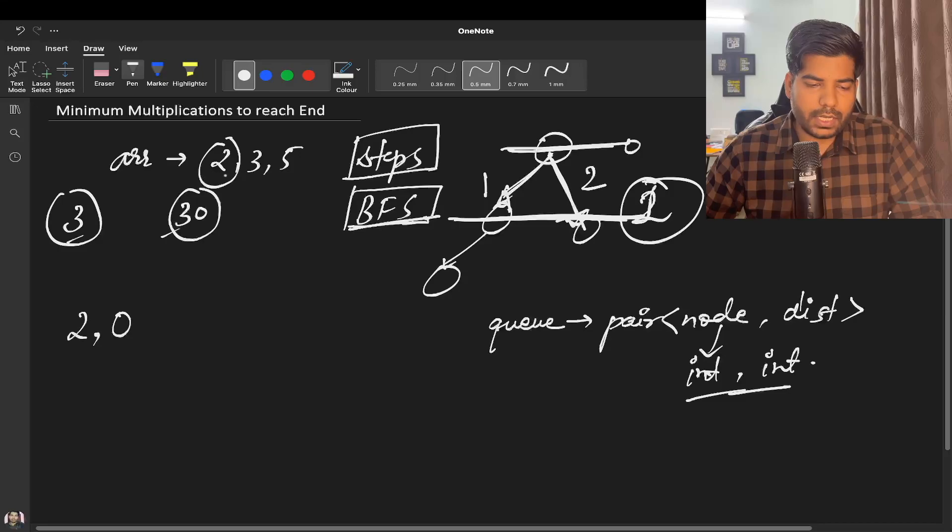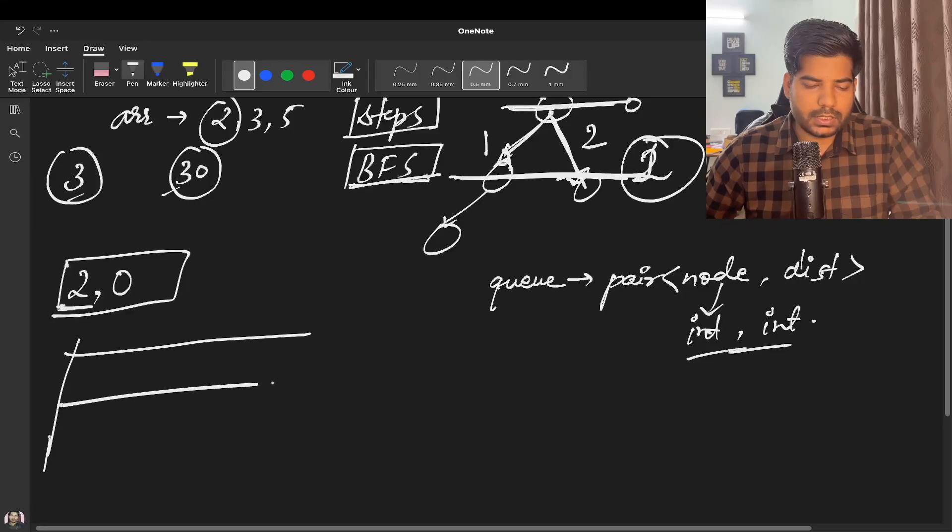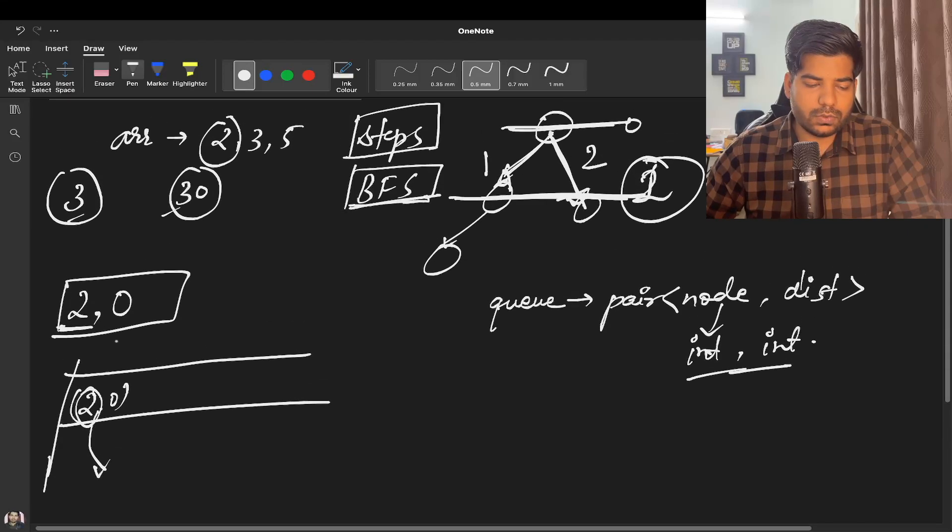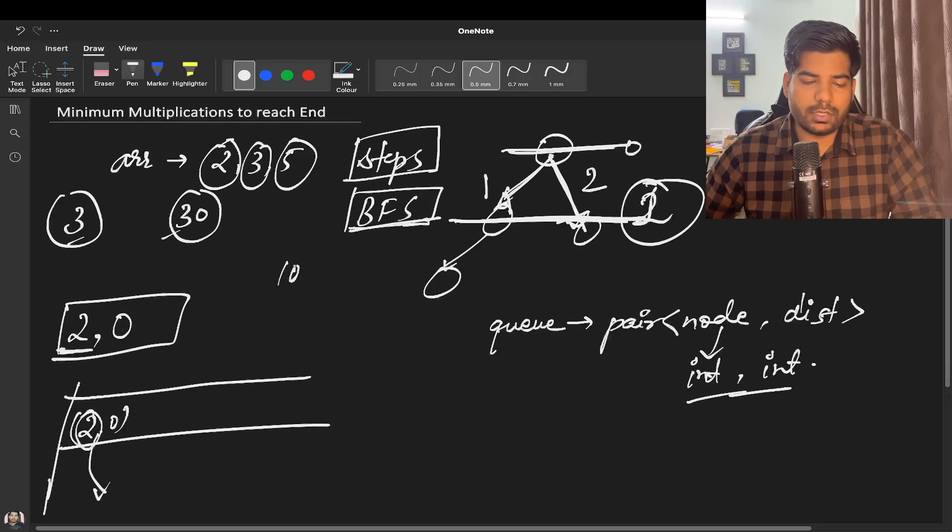Now, from where to start? First we will push the start into the queue with distance zero. Obviously, start's distance will be zero. Then what we can do is multiply our start. First of all, we will get this node out of the queue. We need to modulo 10 to the power 5 after each and every time.